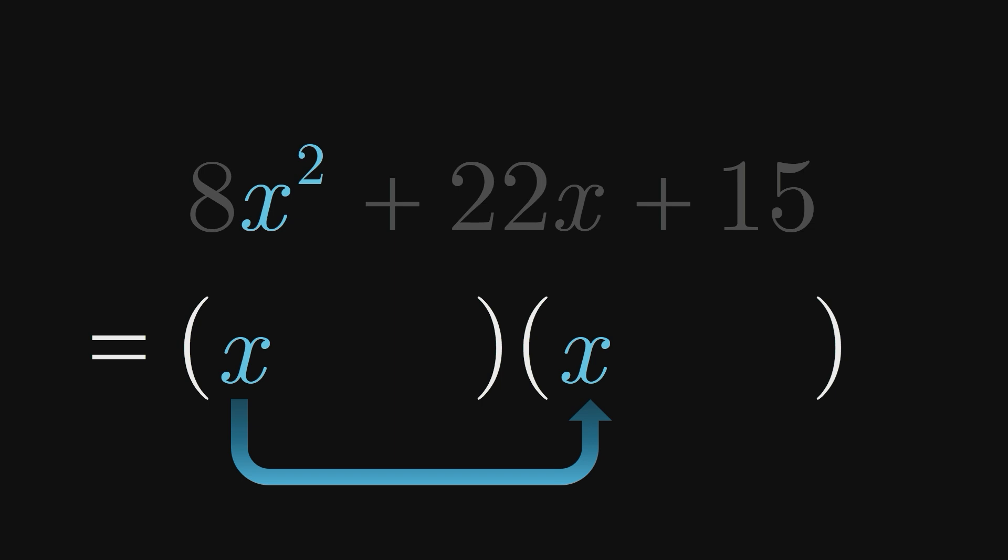However, the original trinomial's x squared term is not 1x squared, but rather 8x squared. No problem, switching x to 8x in one of our factors would give us the desired result of 8x squared. But we could also use 2x in one factor and 4x in the other. We'll soon see why 2x and 4x is the way to go here.